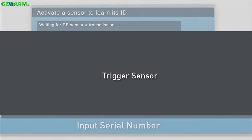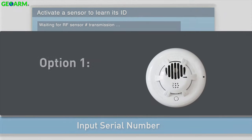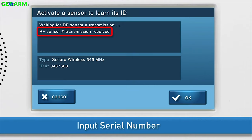Trigger the sensor. There are two ways to trigger the carbon monoxide alarm. Option 1, press and hold the test hush button continuously until you see a confirmation message that the transmission was received, along with the ID number.